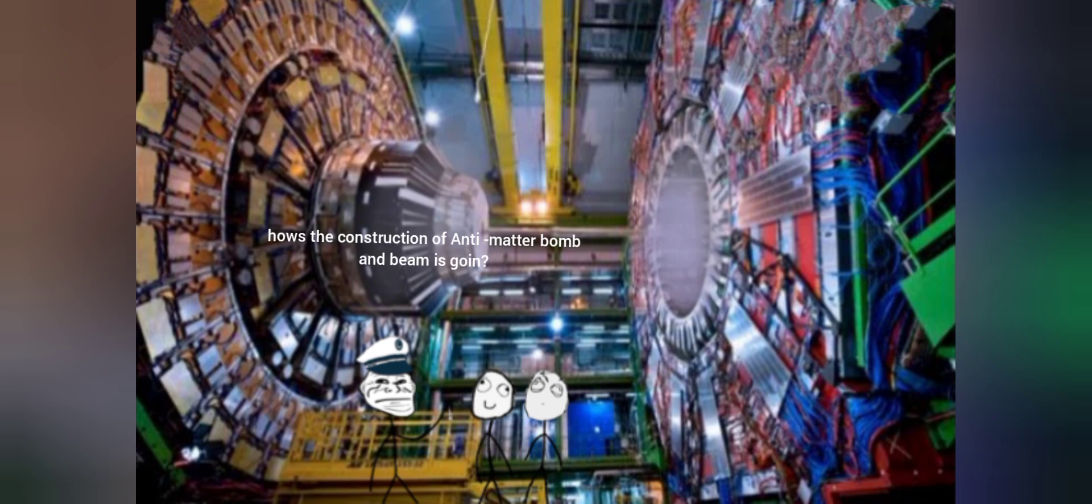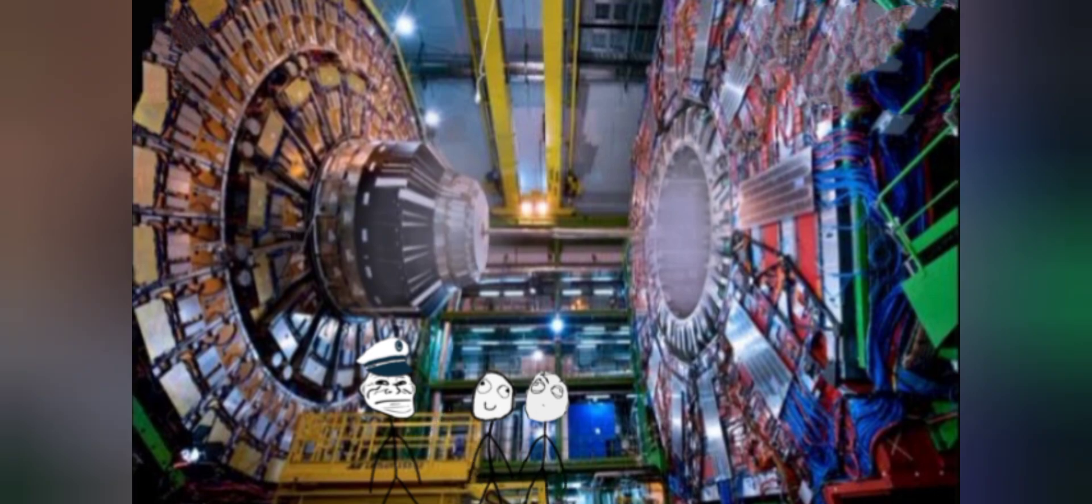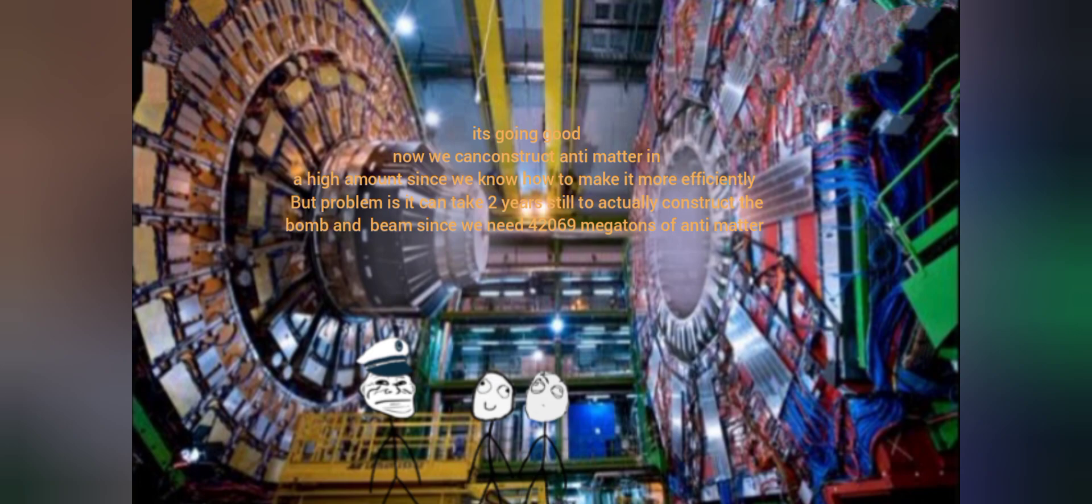How's the construction of antimatter bomb and beam going? It's going good. Now we can construct antimatter in a high amount since we know how to make it more efficiently, but problem is it can take 2 years still to actually construct the bomb and beam since we need 42,069 megatons of antimatter.